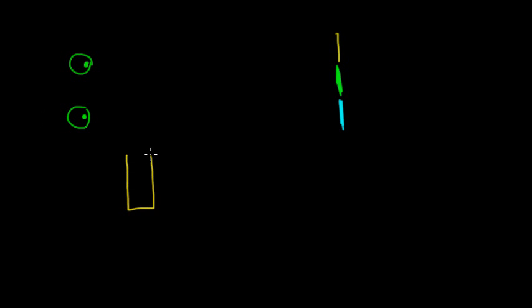A good place to start is by considering how do we actually see depth perception — how do our eyes register distance? Let's say I draw a pair of eyes, and far away there's a wall that has a bunch of different colors: part of the wall is yellow, part is green, and part is blue. As I look at this wall, I see a yellow panel, a green panel, and a blue panel.